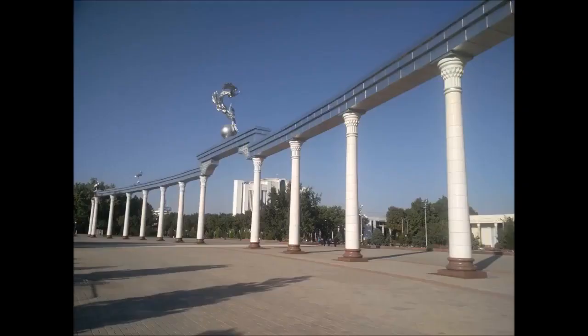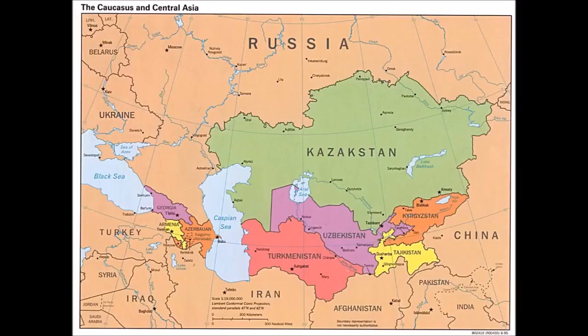Uzbekistan, officially the Republic of Uzbekistan, is a doubly landlocked sovereign state in Central Asia. It is a secular, unitary, constitutional republic comprising 12 provinces, one autonomous republic, and a capital city. Uzbekistan is bordered by five landlocked countries: Kazakhstan to the north, Kyrgyzstan to the northeast, Tajikistan to the southeast, Afghanistan to the south, and Turkmenistan to the southwest.